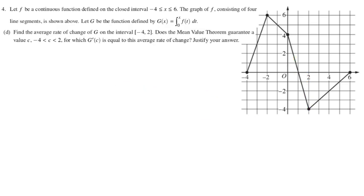All right, part D, find the average rate of change of g on the interval from negative 4 to 2. All right, so that's part 1. Then does the mean value theorem guarantee a value c for which g prime of c is equal to the average rate of change? So that's basically saying, does g satisfy the criteria for the mean value theorem? Is g continuous and is g continuous on the closed interval and differentiable on the open? That's what we need to answer. So first, the average rate of change.